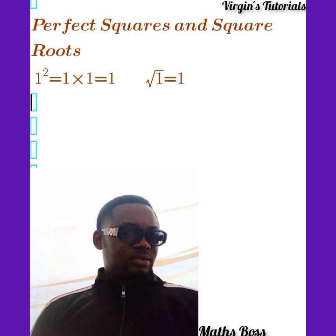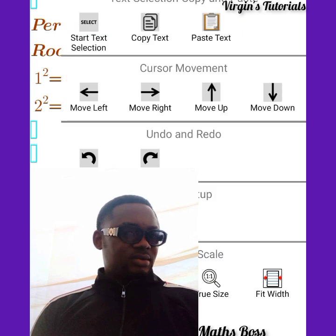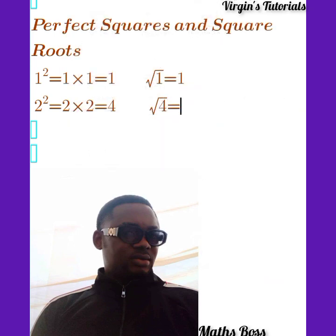Now, we have 2 raised to the power 2, that is 2 squared. 2 squared is simply 2 times 2, and 2 times 2 is just 4. When we shift to the square root side, the square root of 4 is simply 2.